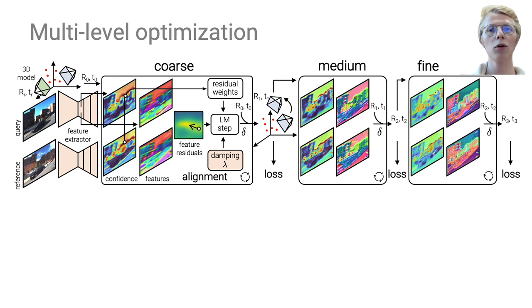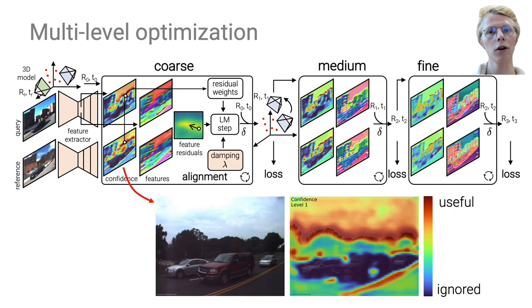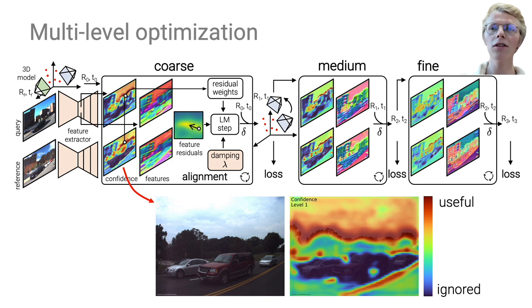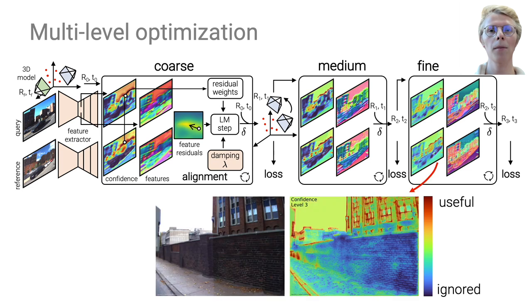PixLoc is trained by supervising only the final poses, and thus does not require ground-truth 3D geometry. The confidence learns to ignore dynamic objects like cars and to focus on distinctive parts, like treetops. It can also ignore self-similarities that create local minima in the optimization, such as the brick wall shown here.